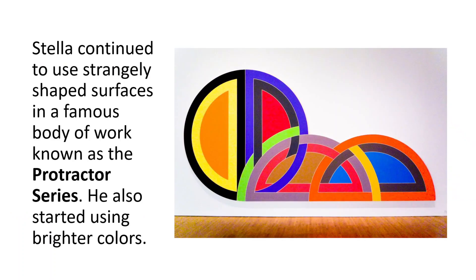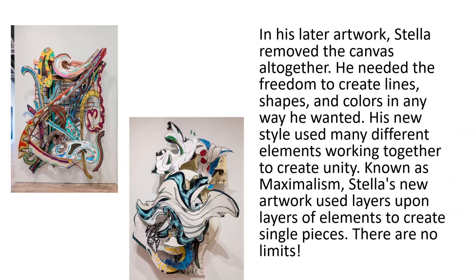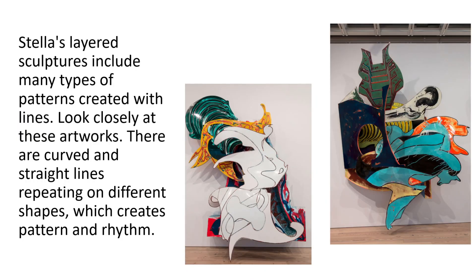Stella started introducing color and looking at how color could control the movement of the eye in a work. He continued to use the protractor shape along with circles, triangles, and bright primary and secondary colors in his later work. He eventually removed the canvas altogether — which we referenced with our second piece on Make Day, looking at the freedom of creating lines, shapes, and colors freely. He used pattern and repetition to create unity, and eventually developed a style known as maximalism — lots of crazy movement and cool stuff — finishing with layered works of art where he had patterns layered over one another.